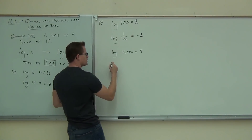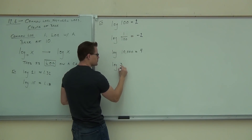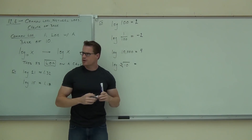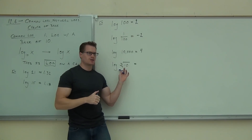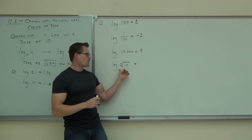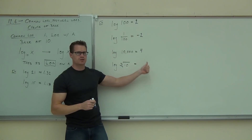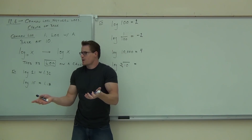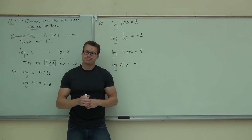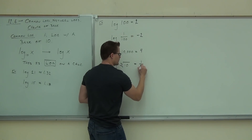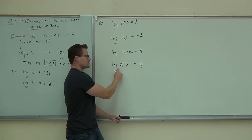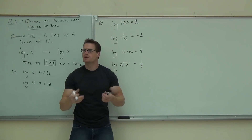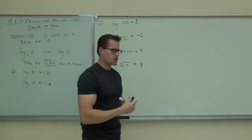Last one — let's do log of the cube root of 10. Our base is 10. What power do you need to raise 10 to in order to get the cube root of 10? The cube root is a one-third power. Is 10 to the 1/3 equal to the cube root of 10? Yes — so the answer is 1/3. That's all we're doing: figuring out what exponent you need to raise 10 to.